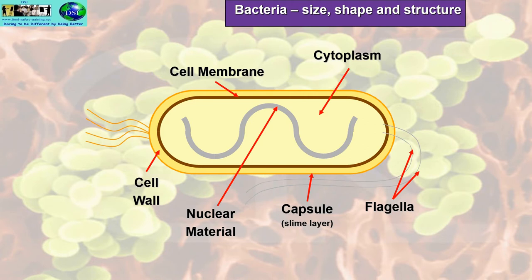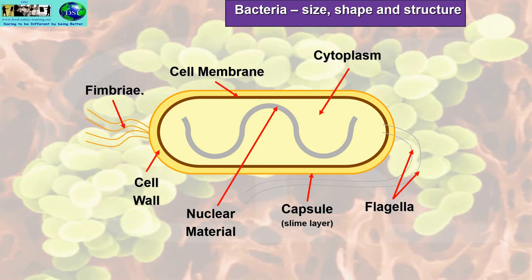If you've ever seen bacteria in a video, the flagella act like a person swimming breaststroke — like arms that flap back and forth to project the bacterial cell forward, backward, or whichever way it wants to go. The fimbriae are used for adhesive properties, causing the cell to stick to animals' guts and onto other cells.